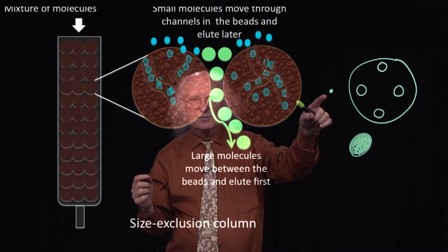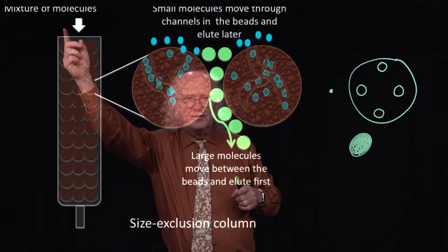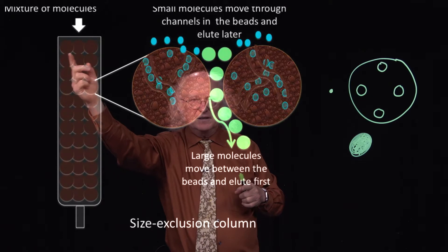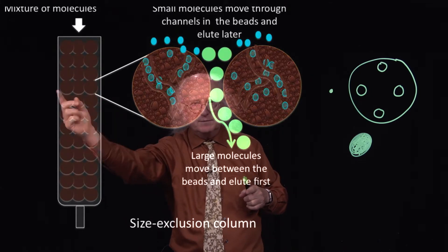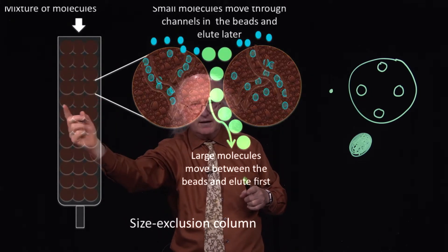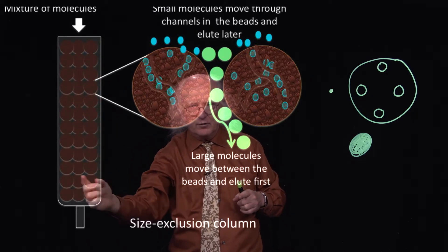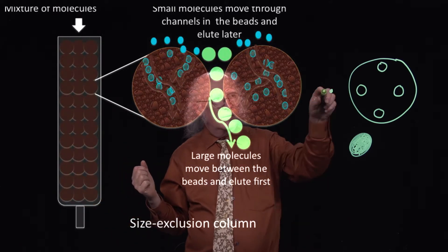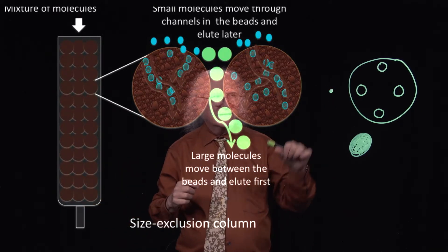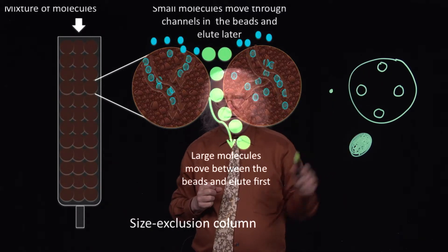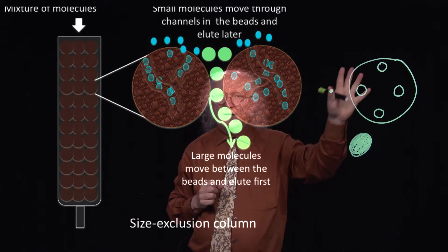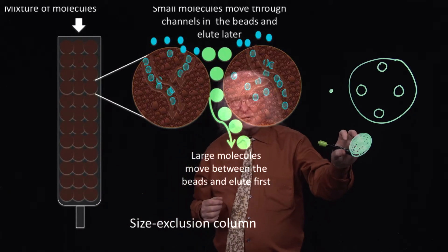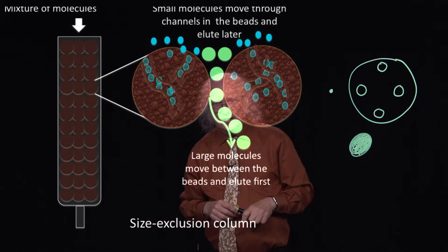Whereas molecules that are small pass through bead after bead in a very contorted back-and-forth path. The important point is that molecules that can fit into the holes of the beads travel a longer distance through the column than molecules that cannot fit into them.